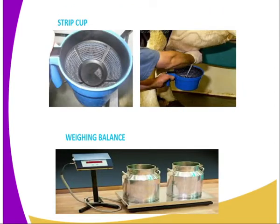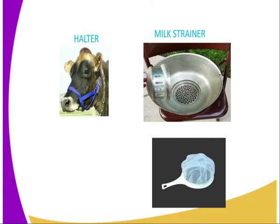Then we have the strip cup. The strip cup is used to detect whether a certain cow is suffering from mastitis, which is a disease that normally affects female animals. Then we have the weighing balance, which is used to measure the weight of the milk after milking. Then we have the halter, which is used to handle the animal — it makes handling of the animal much easier. Then we have the milking strainer, which is used to sieve or strain the milk after milking.